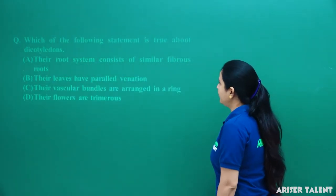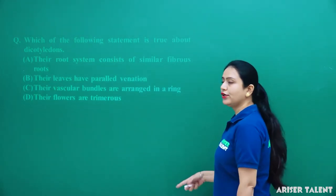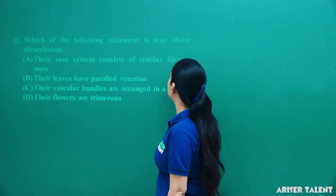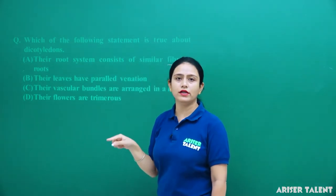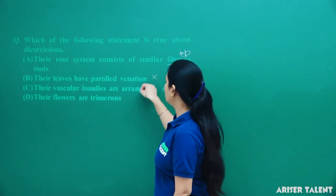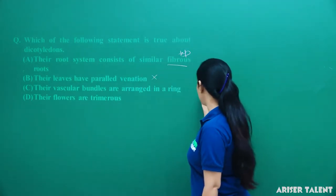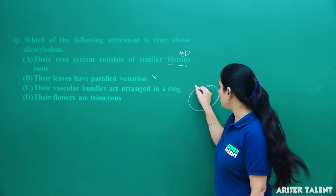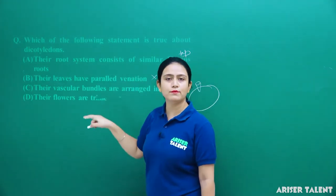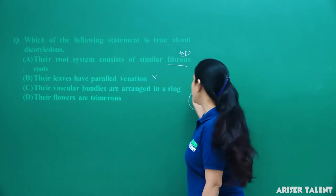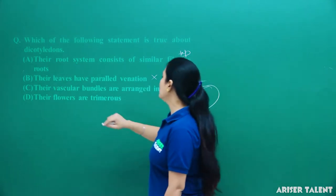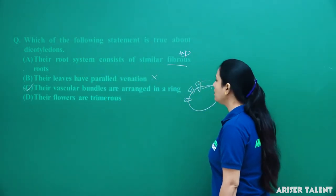Which statement is true about dicotyledons? Dicotyledons have two cotyledons in the seeds. Their root system consists of fibrous roots — no, in dicotyledons they have a tap root system. Their leaves have parallel venation — no. Their vascular bundles are arranged in a ring — yes. The xylem and phloem in dicotyledon plants are arranged in a ring. This is the correct option.